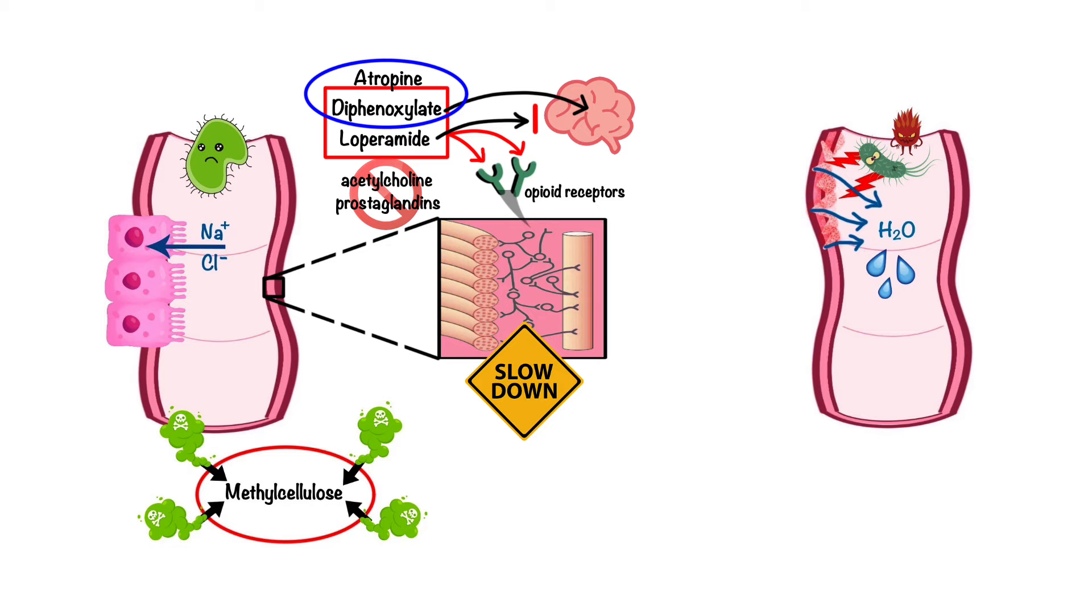Lastly, we have bismuth subsalicylate, which works by inhibiting replication of certain bacteria and viruses, as well as reducing inflammation and decreasing the flow of fluids and electrolytes into the bowel.